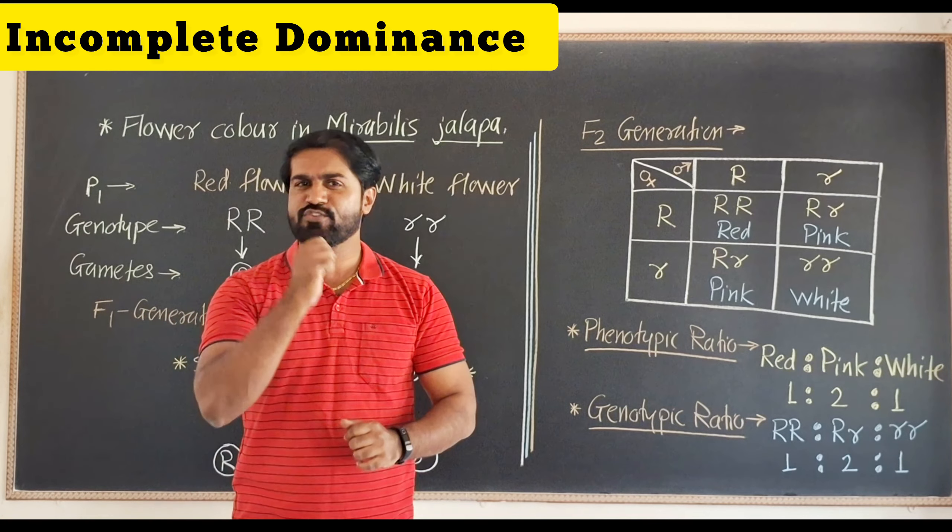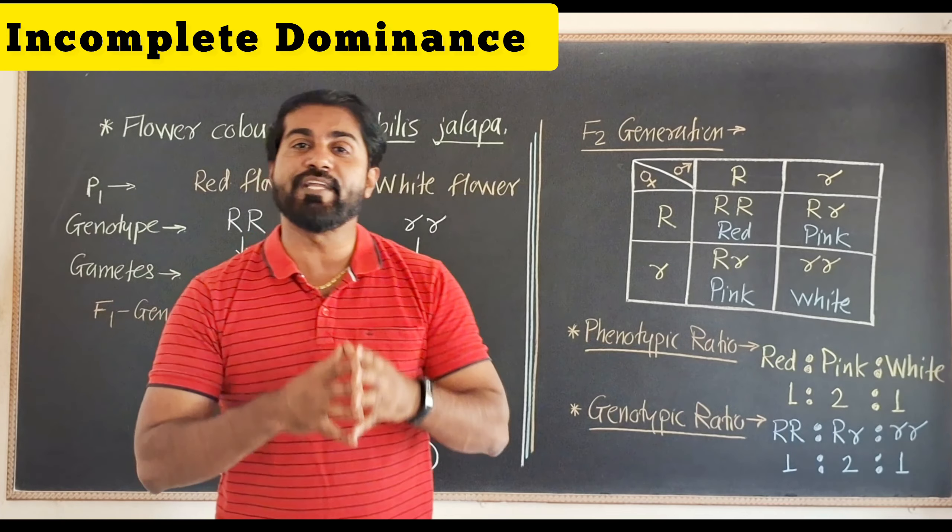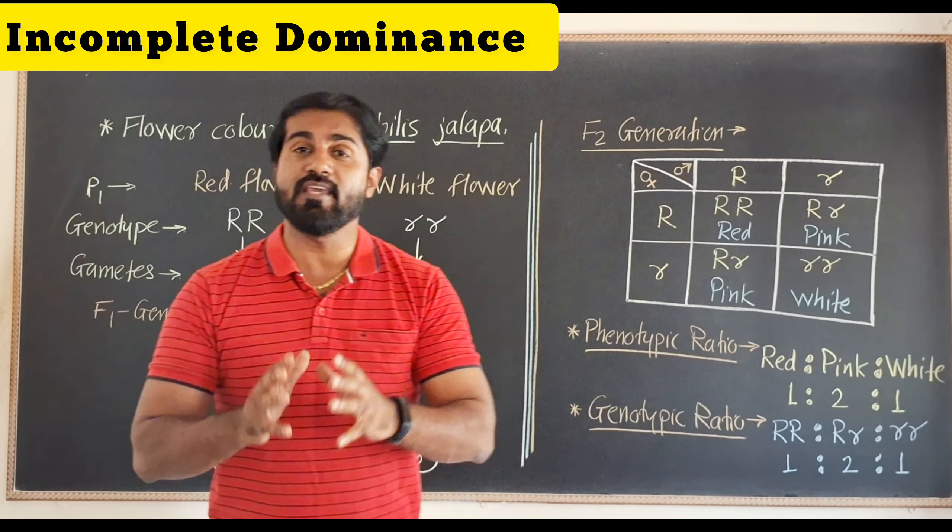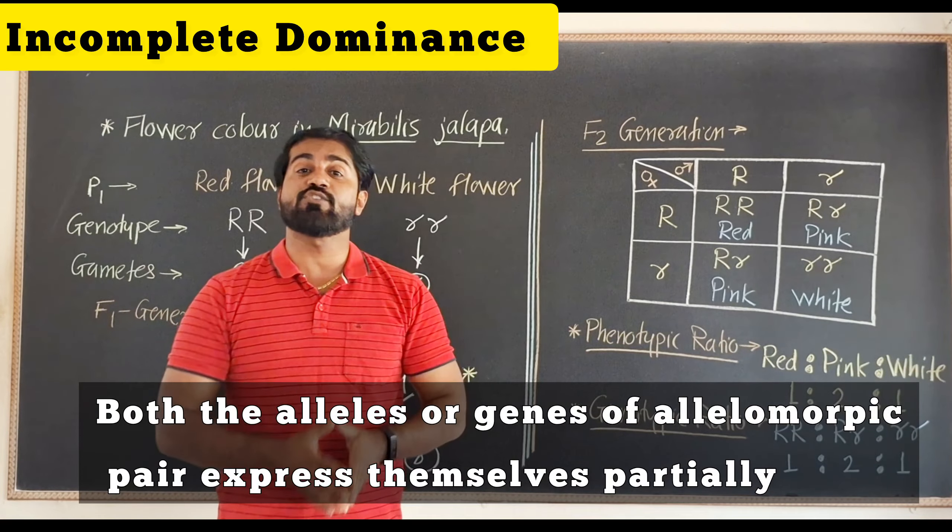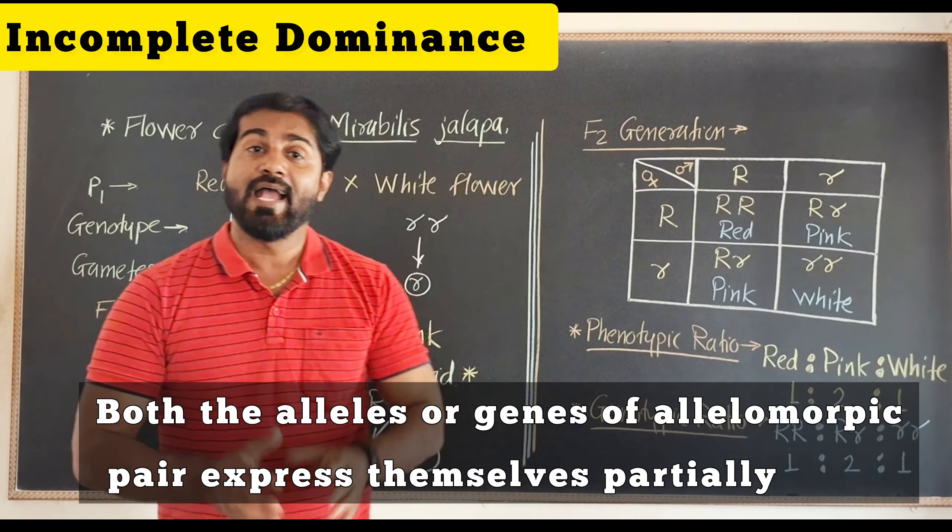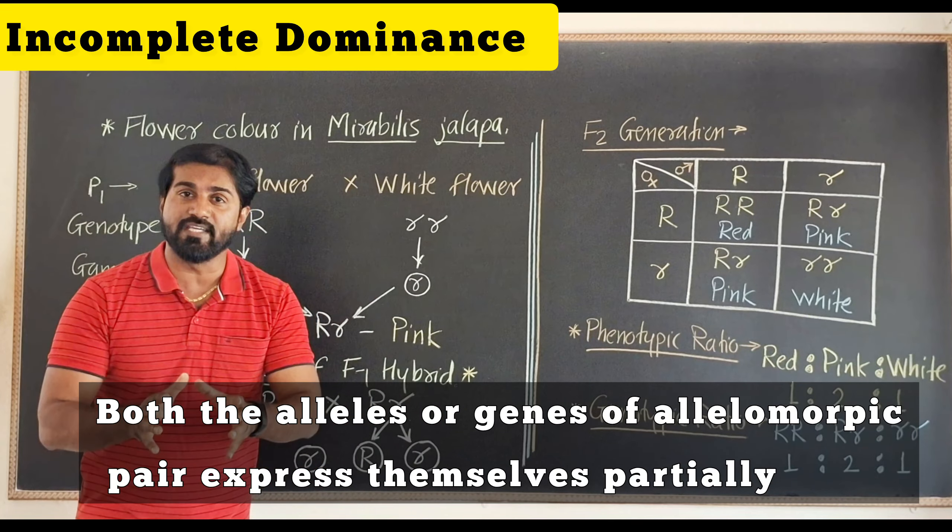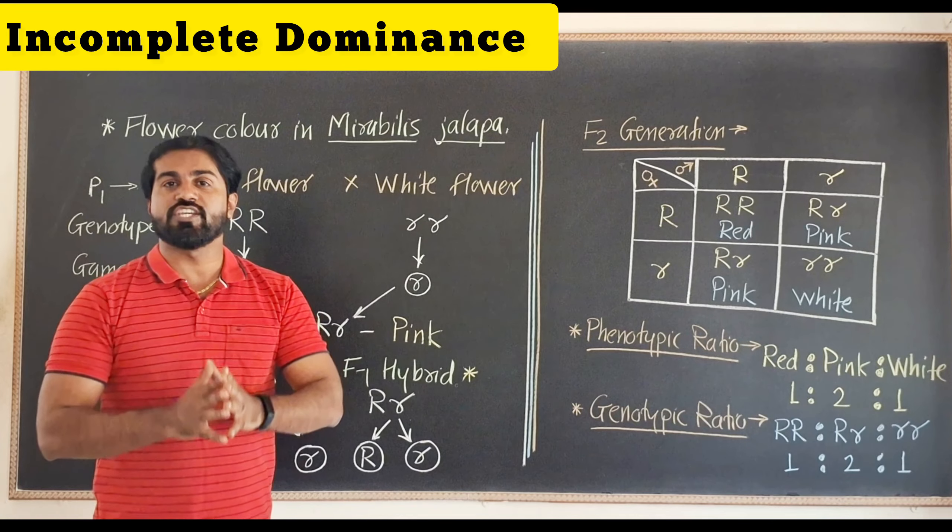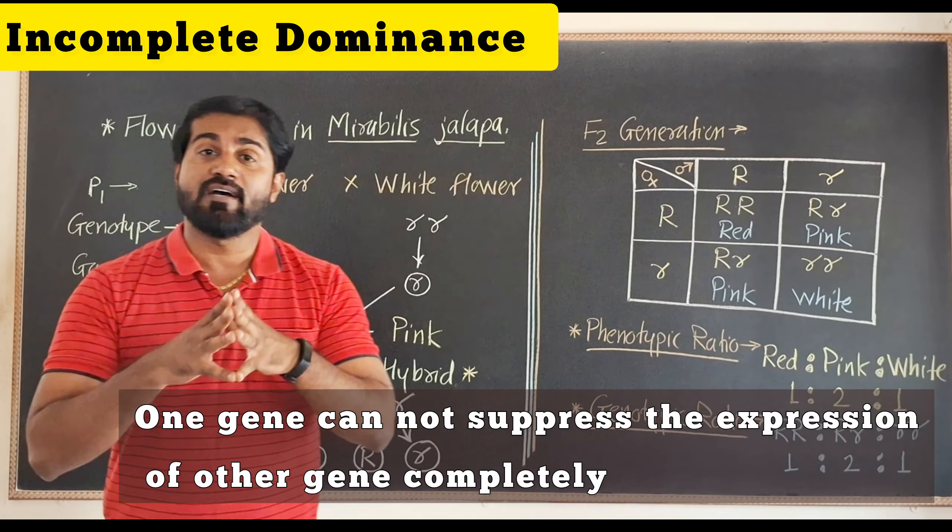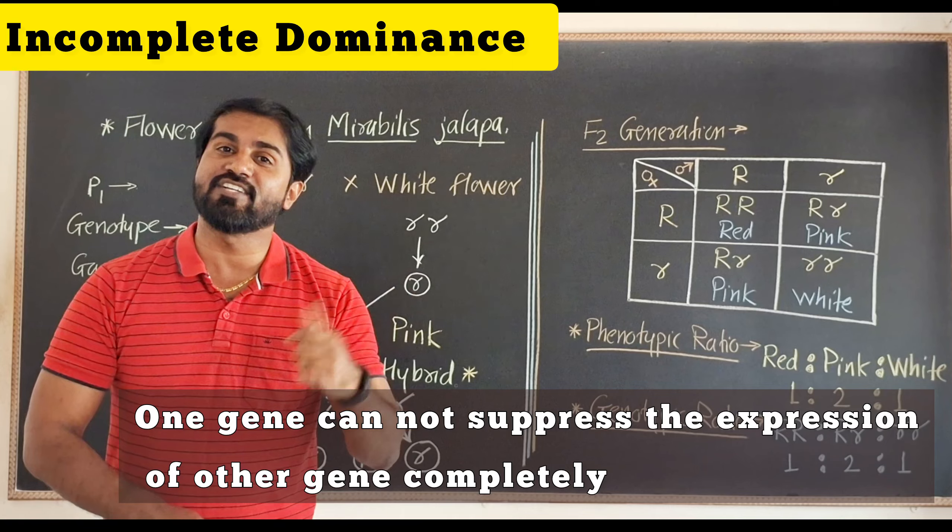The name itself suggests its meaning - incomplete means partial. Here both the genes of an allelic pair express themselves partially. That means no gene can suppress the expression of the other gene.